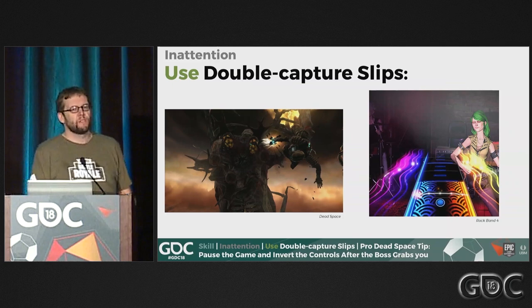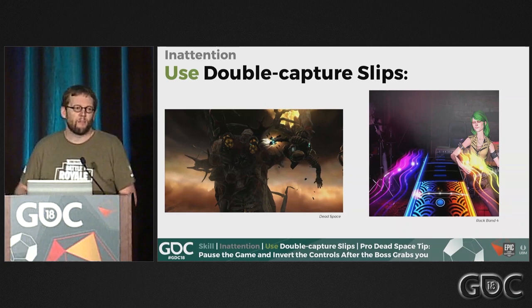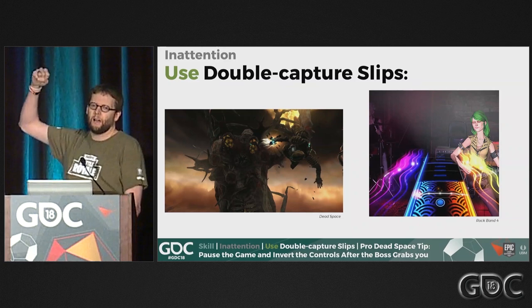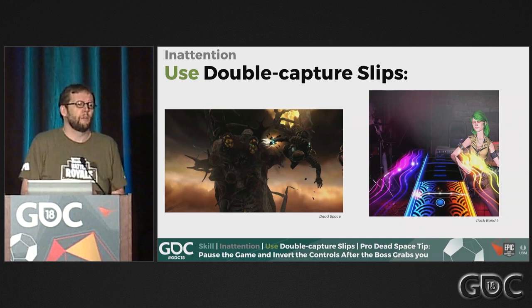How can you use double capture slips? They get used a lot in any game that requires fast-paced twitch action. Something like Rock Band will be throwing a lot at you and it's part of the challenge to choose the right action under pressure. A more direct example was in Dead Space — when you fought the boss, it would grab you and pull you upside down, inverting your controls. That causes extra difficulty because double capture slips take over; you're so used to aiming that now you have to think about something that used to be automatic.